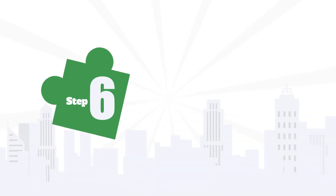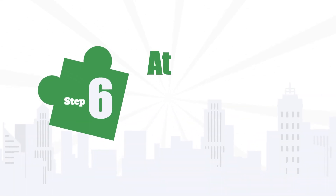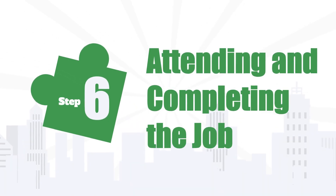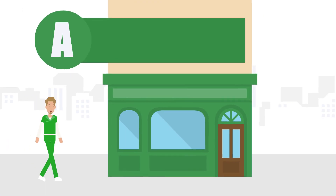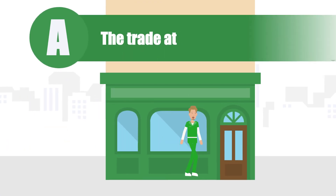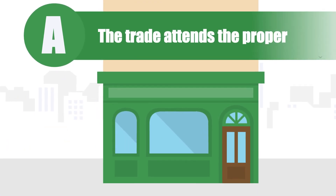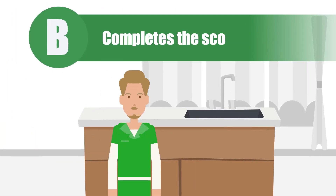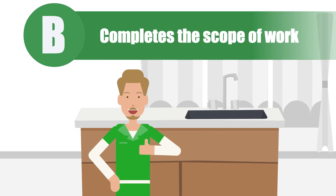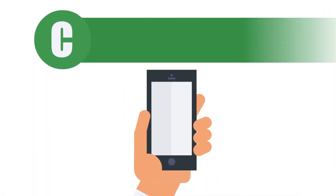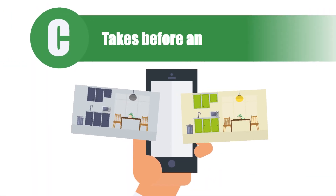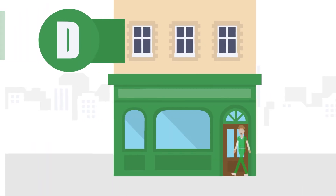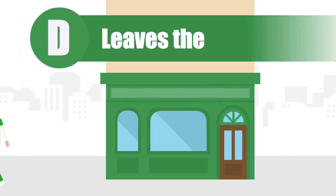Step 6: Attending and completing the job. A: The trades person attends the property. B: Completes the scope of work. C: Takes before and after photos. D: Leaves the property.